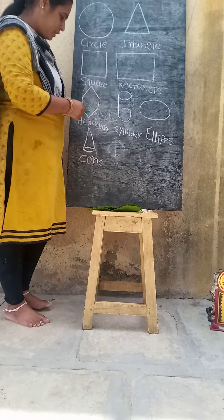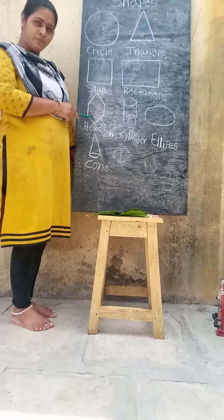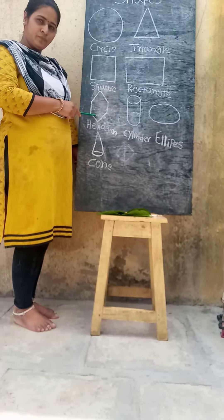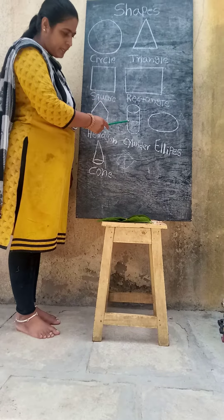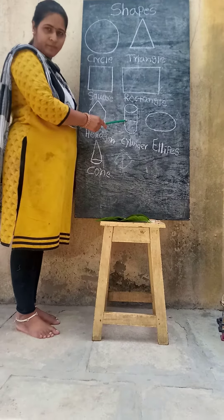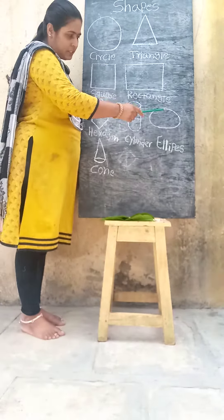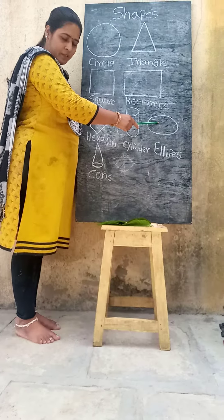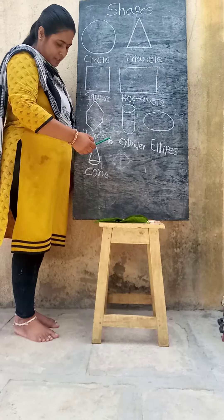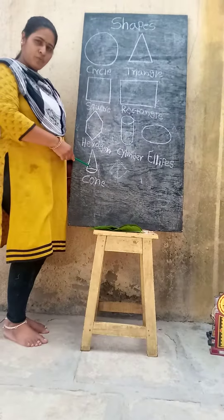It is a hexagon. Hexagon. It is a cylinder. Cylinder. It is? Ellipse. Ellipse. It is? Cone. Cone.